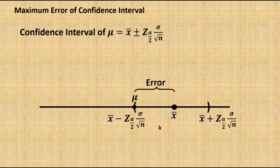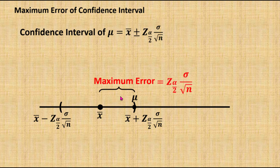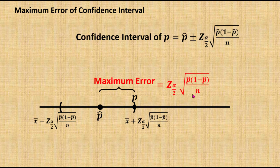If the difference between the sample mean and the population mean is increasing, where the population mean is the same as the lower limit or the same as the upper limit, then this error is the maximum error acceptable. The value of the maximum error is equal to z alpha over 2 times the standard deviation of the sample mean. And for the population proportion, the maximum error is equal to z alpha over 2 times the standard deviation of the sample proportion.